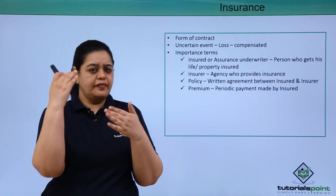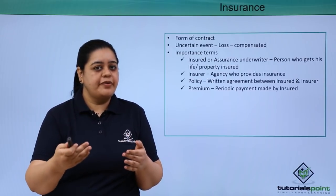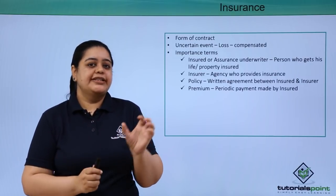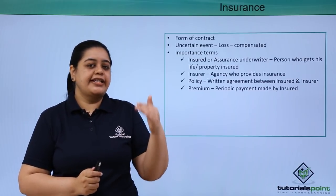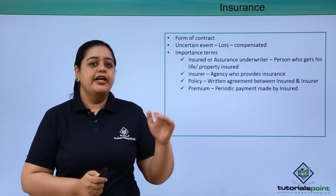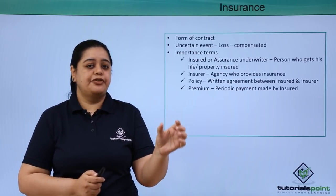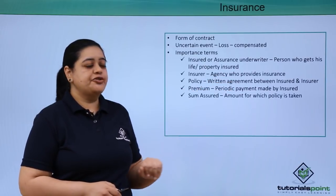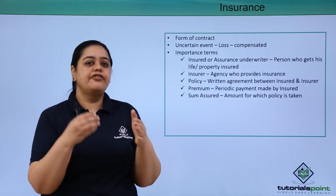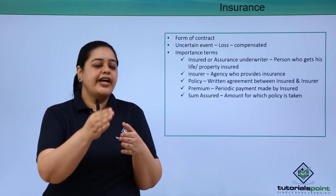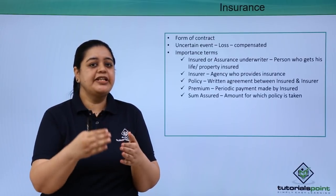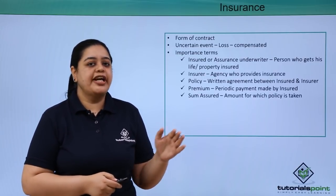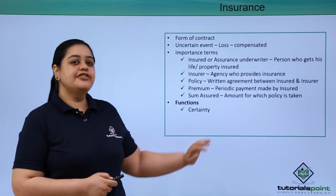What is premium? When you buy an insurance policy, you have to pay a price — a premium — on a periodic basis. For example, if I am taking a life insurance, I need to keep paying the premium over a certain period of time, such as on a yearly basis. The sum assured is the amount for which the policy is taken. If I have taken one lakh insurance, that is the sum assured — the amount I will receive from the company in case the loss happens.